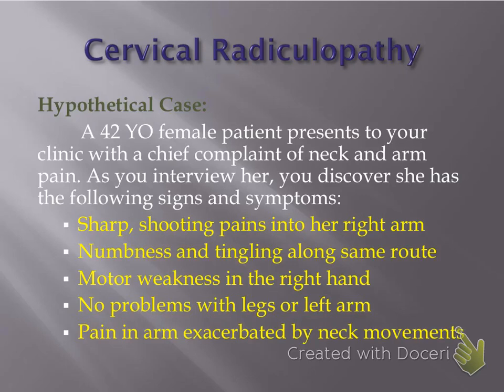Our hypothetical case for cervical radiculopathy: a 42-year-old female patient presents to your clinic with a chief complaint of neck and arm pain. As you interview her, you discover she has sharp, shooting, almost electrical-like pains down into her right arm coming from the neck. She also has numbness and tingling along that same route in the arm, some weakness with the right hand when gripping onto objects, and does not complain of any problems with the legs or left arm — it's solely the right arm. The pain in her arm is made worse with certain neck movements.